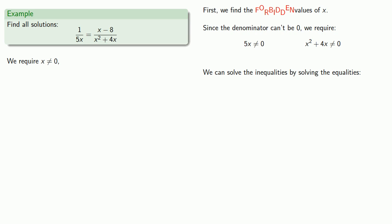We have our second denominator, x squared plus 4x not equal to zero. So we solve the corresponding equality, x squared plus 4x. And here we have an easy factorization since both terms have a factor of x. So we factor.